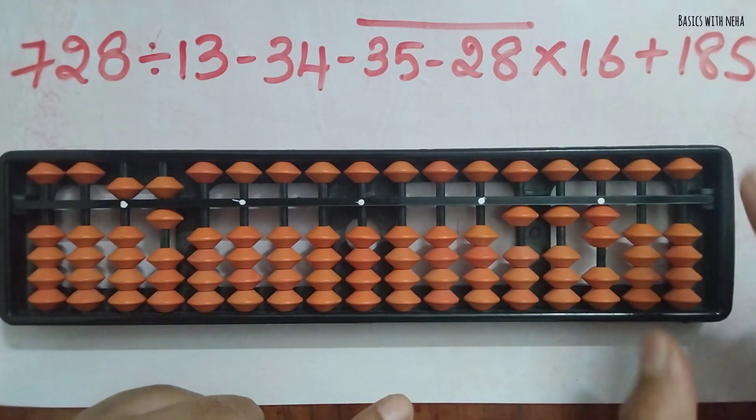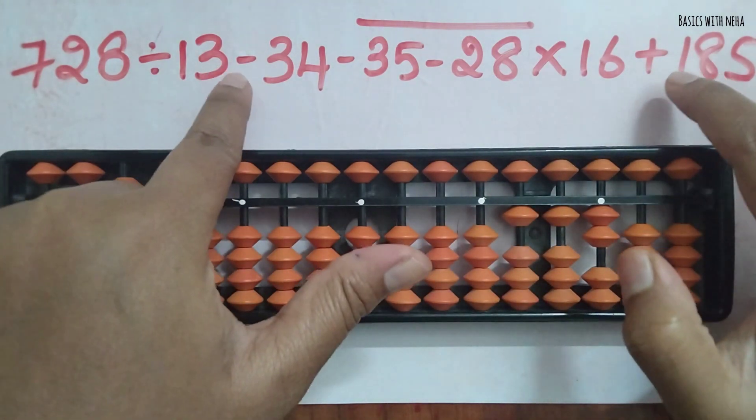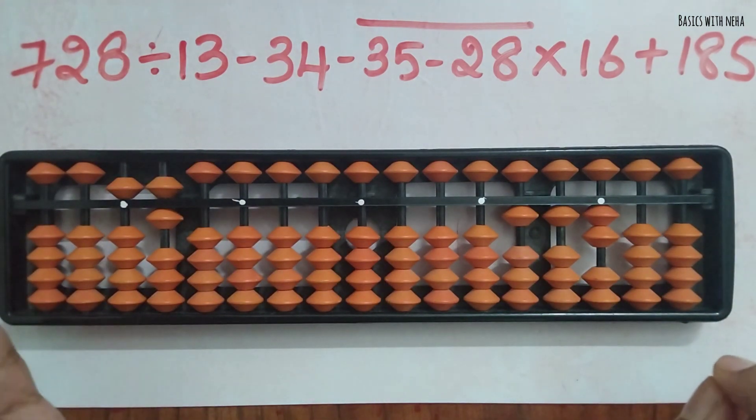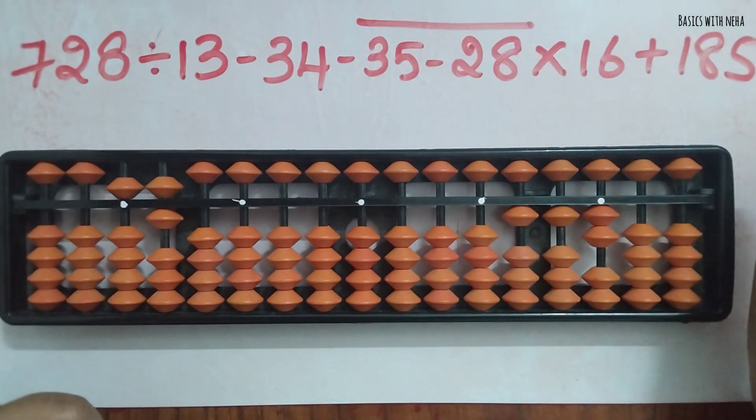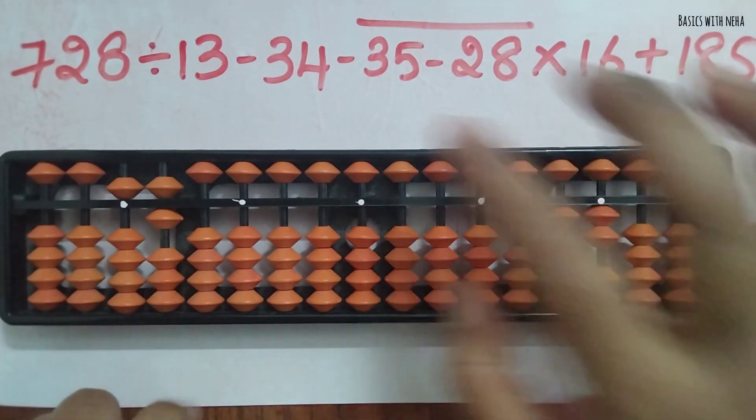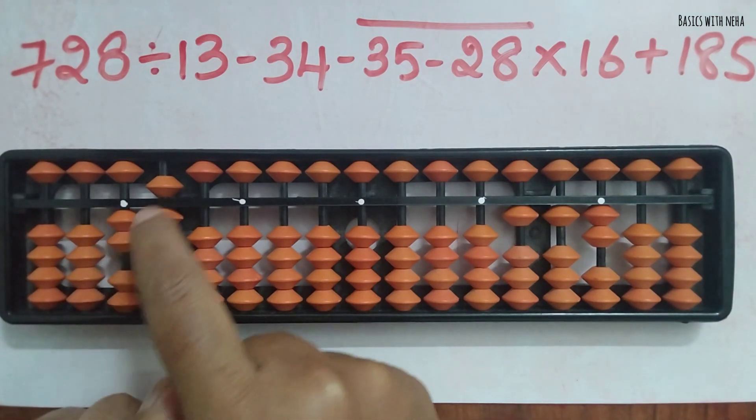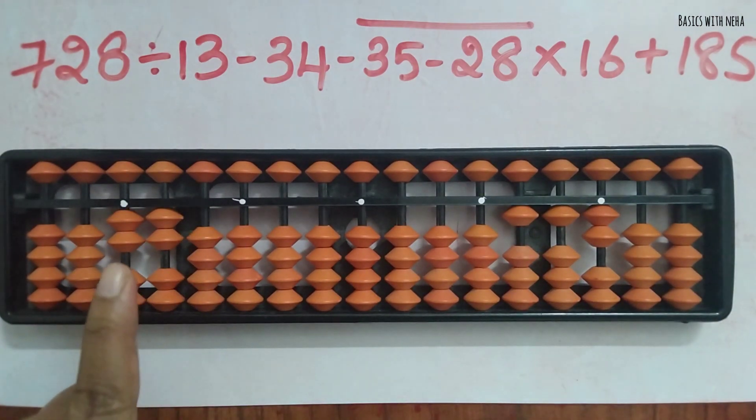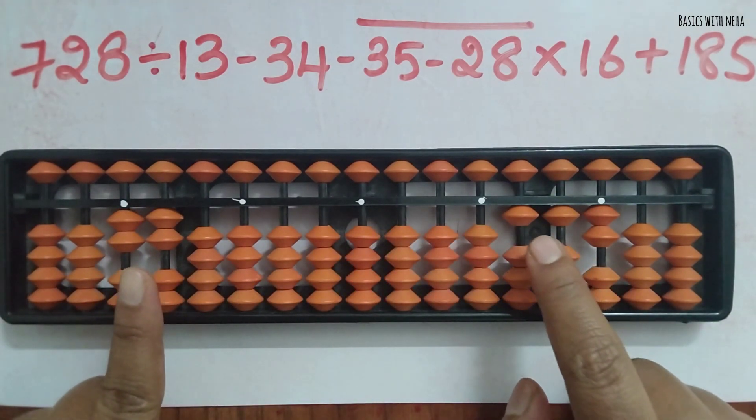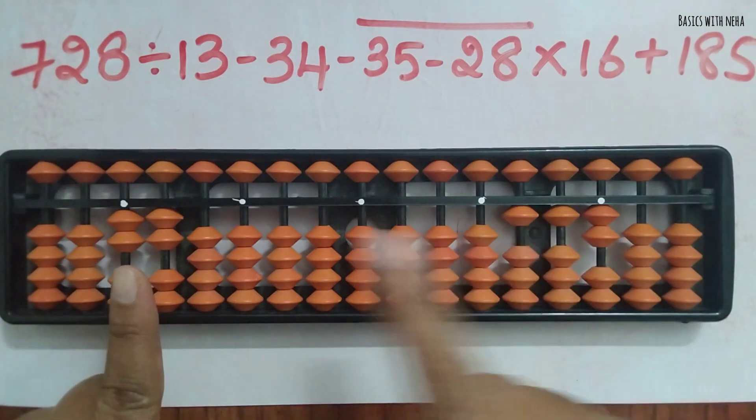Now we are done with the division and this part. Now we have to do addition and subtraction only - two are left. There's a condition that we have to start from left. If both addition and subtraction or multiplication and division are there in one calculation, we should start from the left side. We already have 56 as our answer. Now we are going to minus 34 - minus 3 and minus 4. We have got 22.